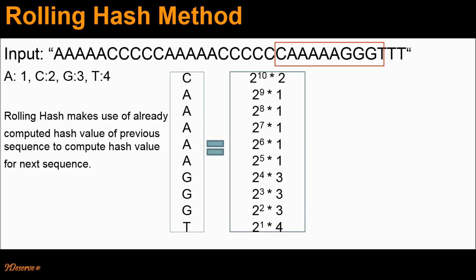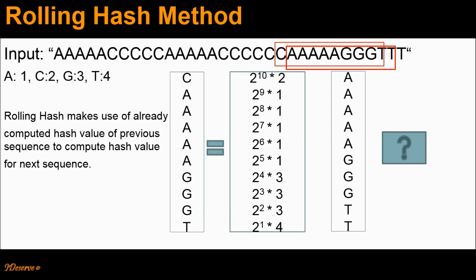After this particular sequence, the next sequence we want to compute the hash value for would be this highlighted sequence. How can we make use of the previously computed hash value for computing the hash value for this new sequence? Because we have shifted the 10-letter window only by 1 character, there is a difference of only 1 character between the old sequence and new sequence. These 9 letters are common between the old sequence and new sequence. Only the letter T is added and letter C is removed.